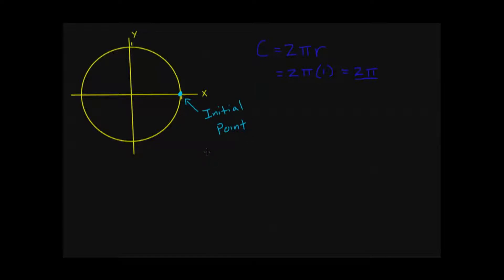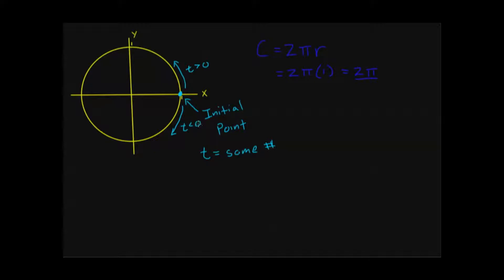You'll often be given a distance as a real number, and we use the variable t. So t equals some number means I'm traveling around the circle from my initial point a distance of t. For direction: this counterclockwise direction is the positive direction, so any t greater than 0 moves counterclockwise. If t is negative, I move in the clockwise direction — the negative direction — traveling an absolute value of t distance clockwise.